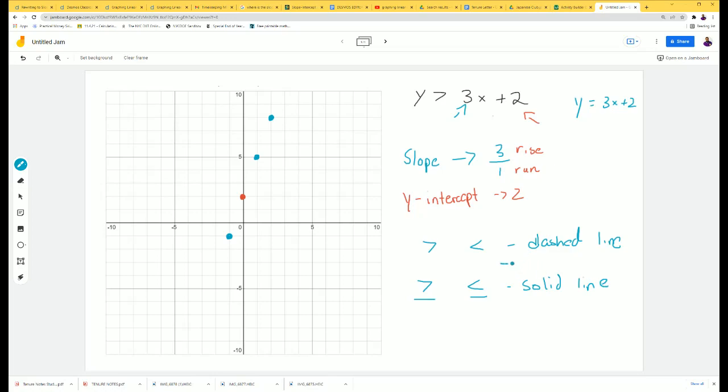So a dashed line would look like this. Let me use a different color for that—I could do it in black. A dashed line could look like this, and a solid line would be a straight, full solid line.